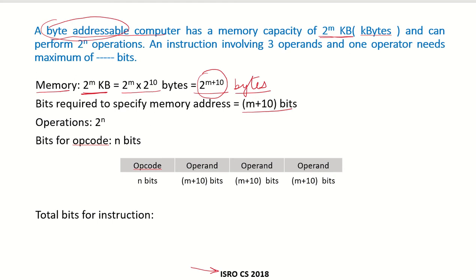This computer can perform 2 to the power of n operations. The number of bits required to specify an opcode is n bits, since the opcode is the operation code. Using these n bits, you can specify a maximum of 2 to the power of n operations.